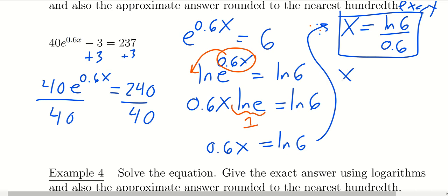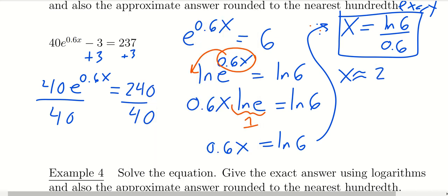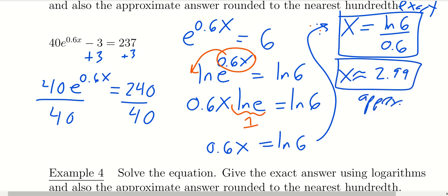For the approximate answer, we compute ln(6) divided by 0.6 in the calculator, and to the nearest hundredth we get x approximately equal to 2.99.